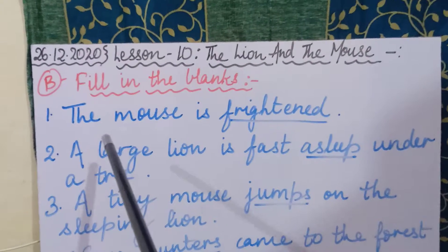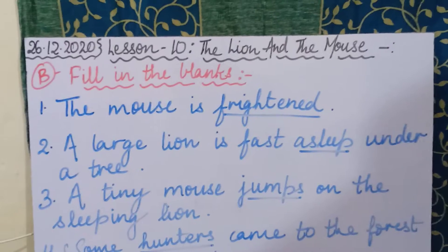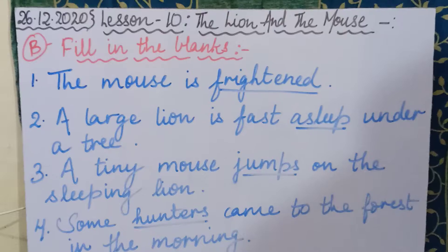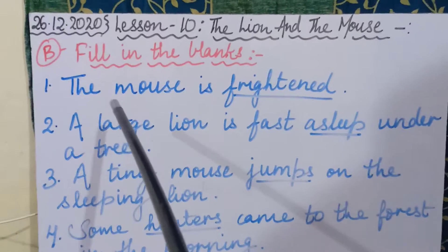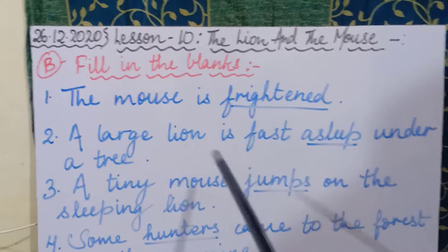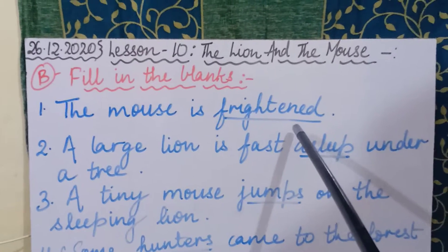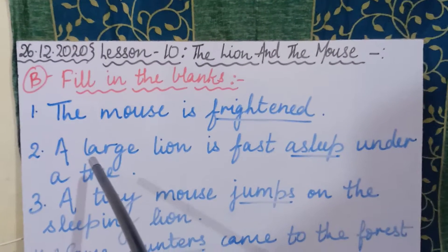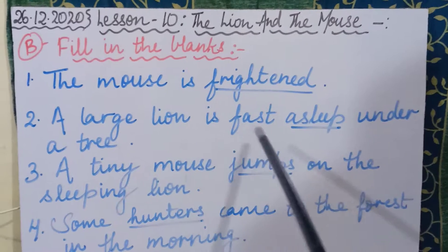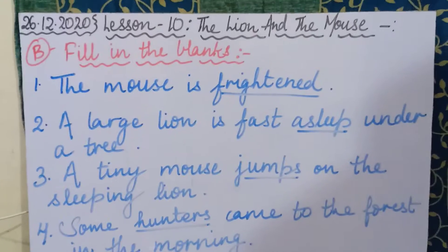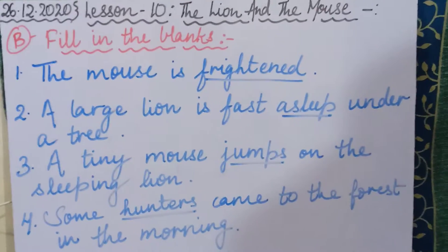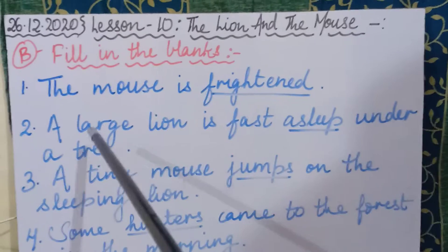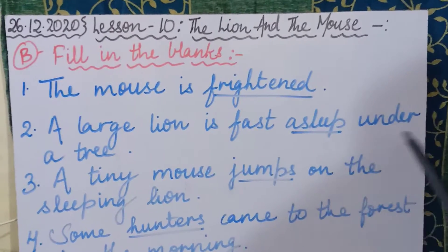Now the first fill-in-the-blank: 'The mouse is ___.' When the mouse heard the lion growling, the mouse was frightened. Since the story is in present tense, we write: The mouse is frightened. F-R-I-G-H-T-E-N-E-D — frightened. Is that clear? Now the second sentence: 'A large lion is fast ___ under a tree.' The large lion was sleeping under the tree, so we use the word asleep. A large lion is fast asleep under a tree.